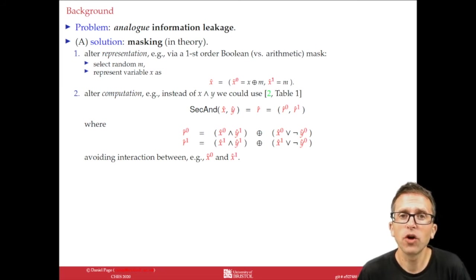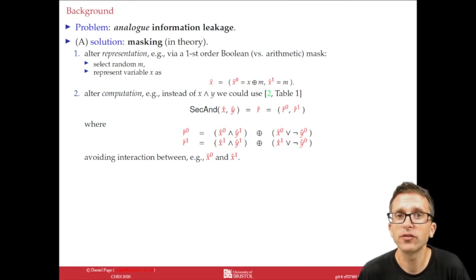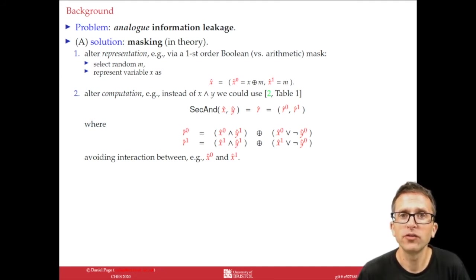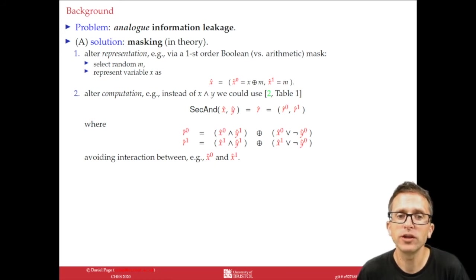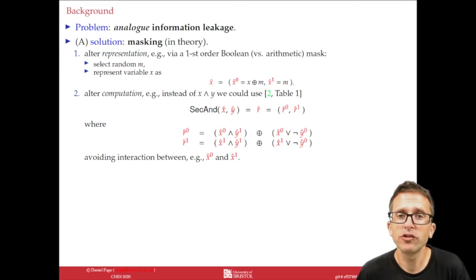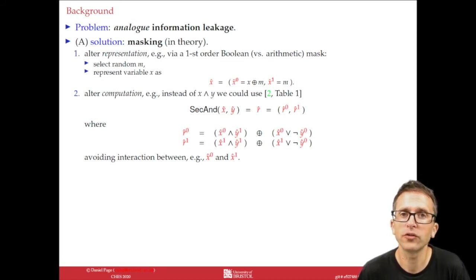The example on the slide shows a secure AND operation and illustrates both a disadvantage and an advantage. The disadvantage is the computational overhead: what was once a single operation is now up to eight operations in the secure alternative. The advantage is that we can reason in a fairly robust way about the security of our implementation — for example, we can reason about the non-interaction of the two shares x0 and x1. The fact that they don't interact with each other within the secure AND means no information should be leaked about the underlying x. Within specific security models and based on specific security assumptions, we can actually make security proofs about our masked algorithm. Clearly this is a big advantage.